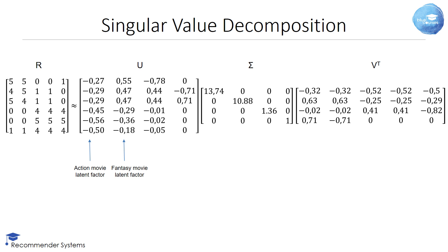You can see it has two big singular values, 13.74 and 10.88, and two smaller ones, 1.36 and 1. This indicates that there are two latent factors in the rating matrix.